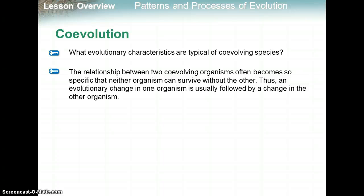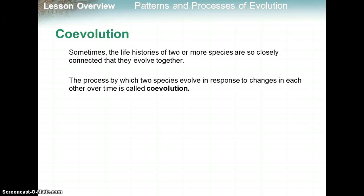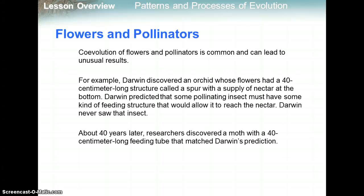Sometimes the life histories of two or more species are so closely connected that they evolve together — a process called coevolution, where species evolve in response to changes in each other over time. For example, Darwin discovered an orchid with a 40-centimeter-long spur with nectar at the bottom and predicted that some pollinating insect must have a feeding structure long enough to reach it. Darwin never saw that insect, but 40 years later researchers discovered a moth with a 40-centimeter-long feeding tube that matched Darwin's prediction exactly — a clear example of coevolution.